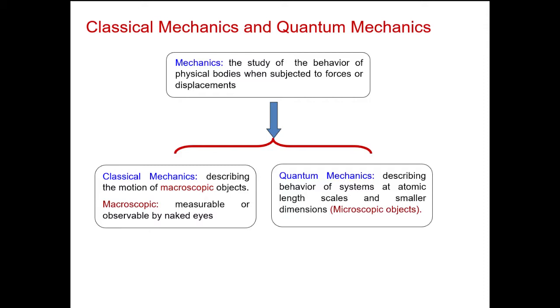So, up to now we have concluded that classical mechanics and quantum mechanics describe two regimes of dimensions of systems which are respectively macroscopic and microscopic regions.